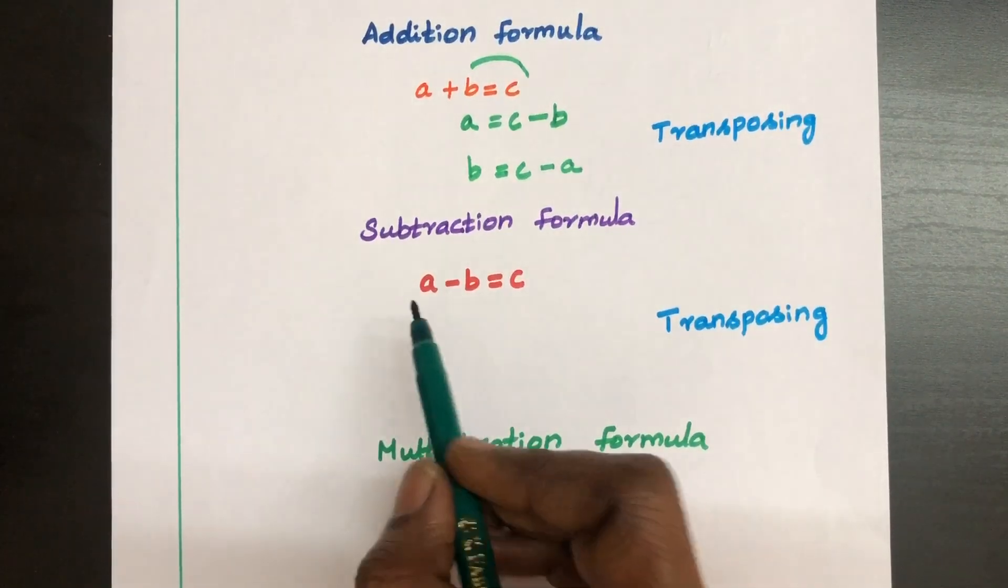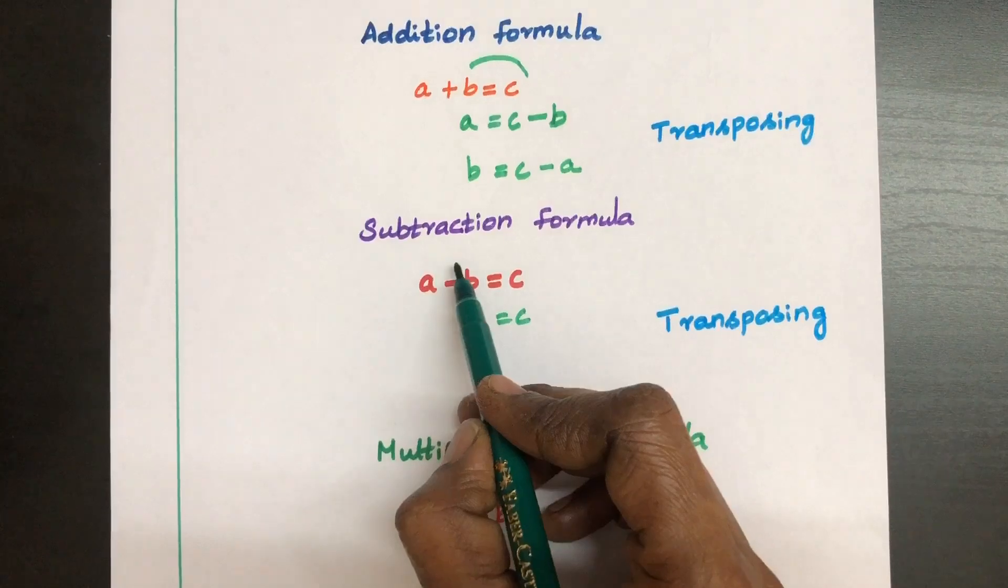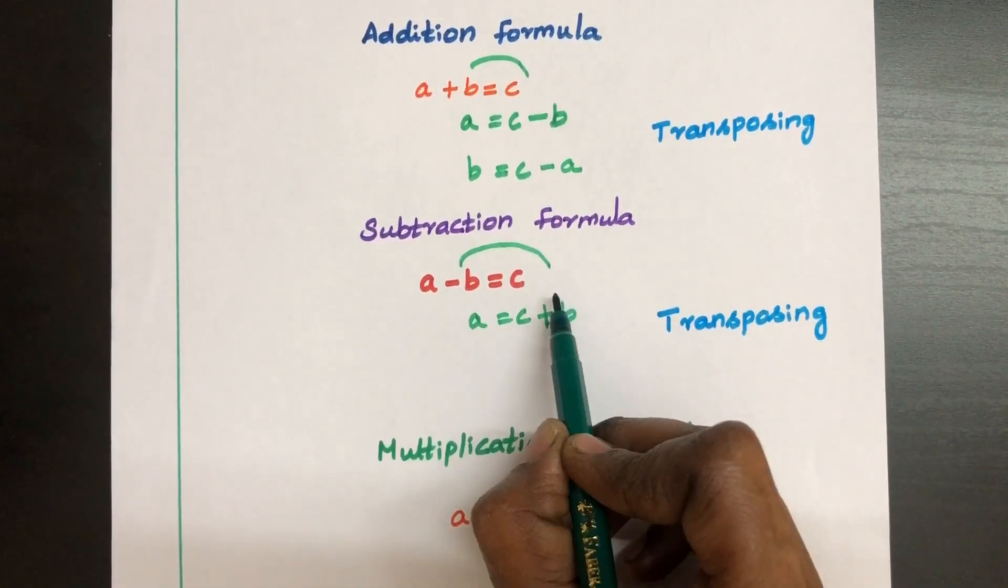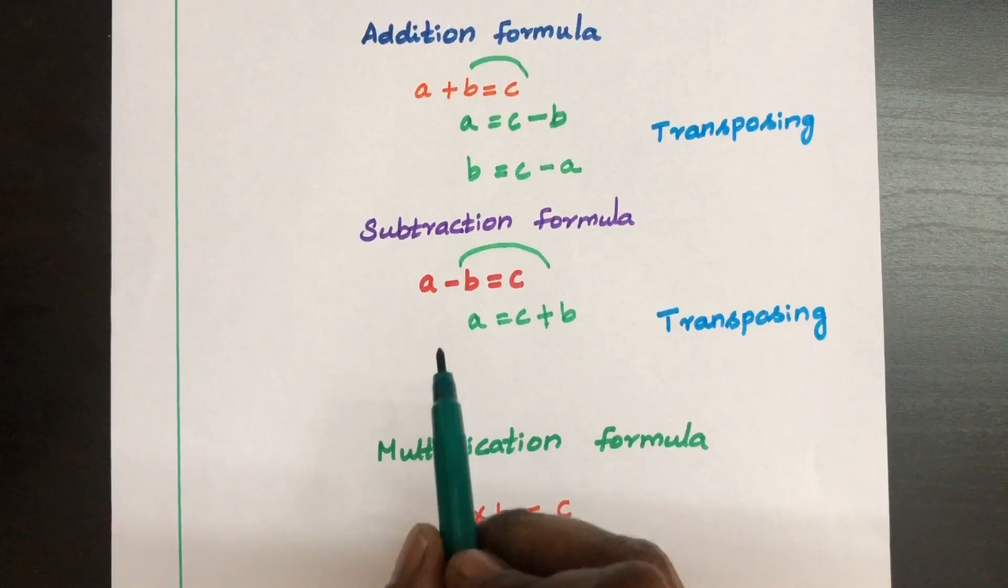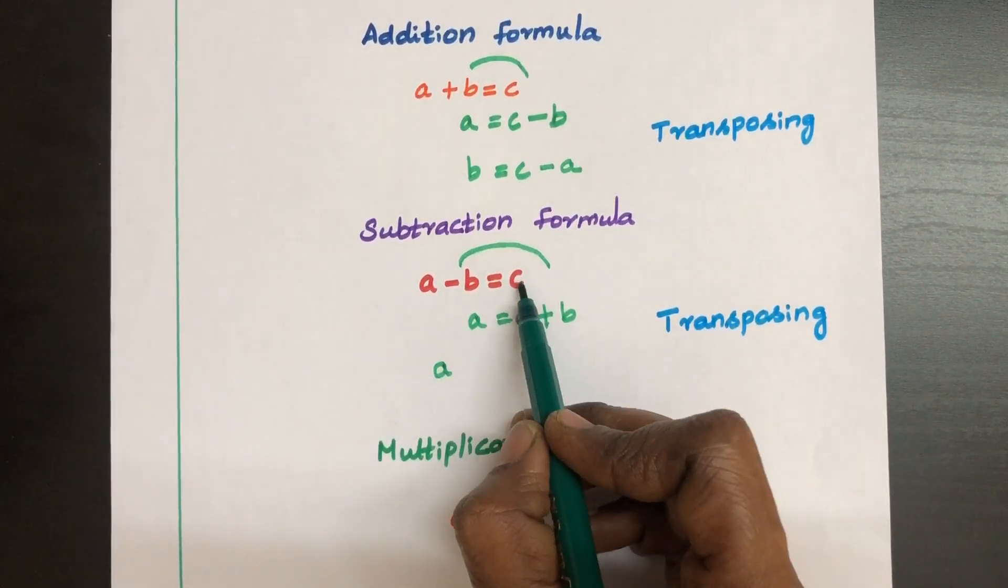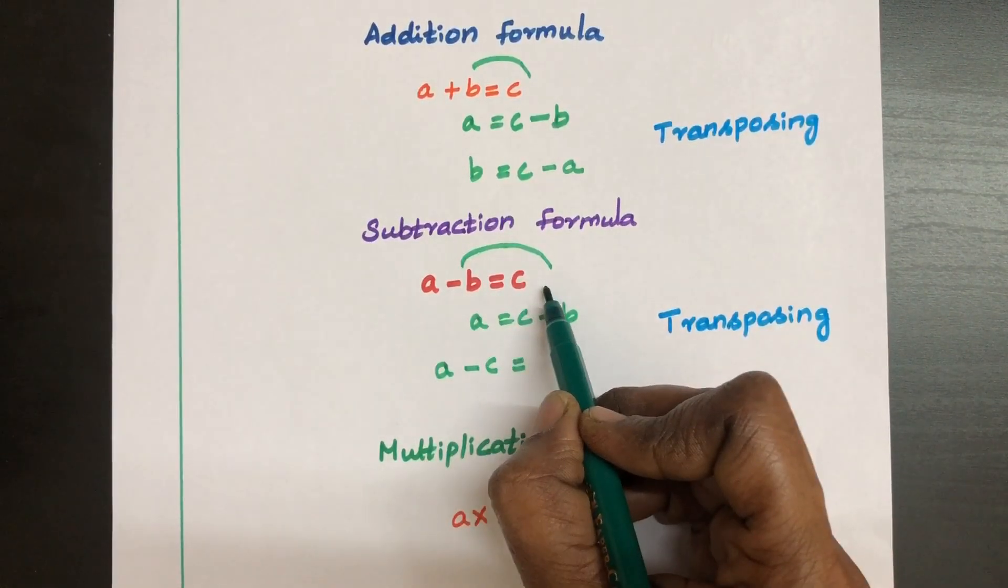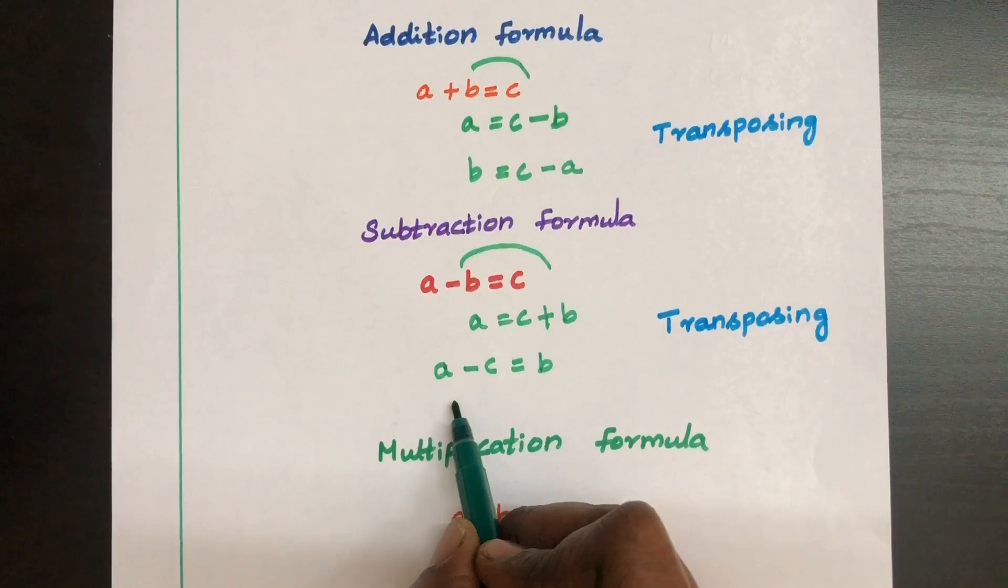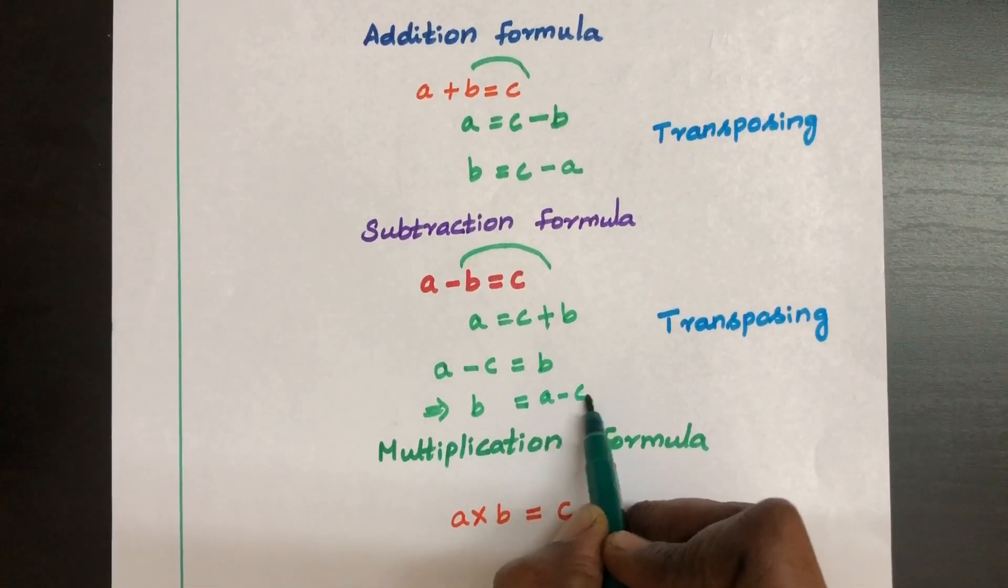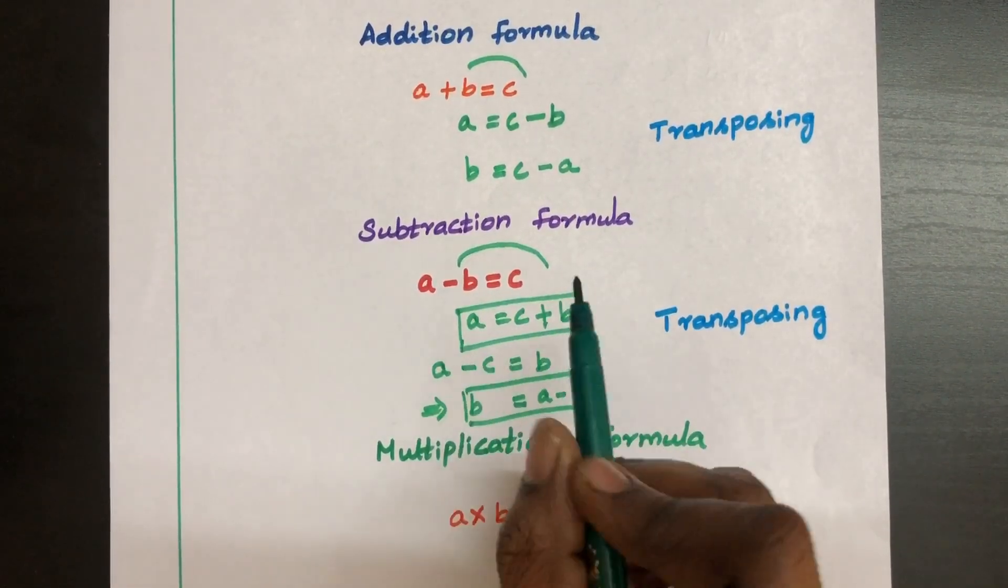Subtraction formula. If you want to know what is A, have A left side and transpose this B right side. So C plus B, negative becomes positive. If you want to know B, transpose A here, minus C equal to transposing B to the right side becomes positive B. That means B equal to A minus C. Value of A is C plus B.